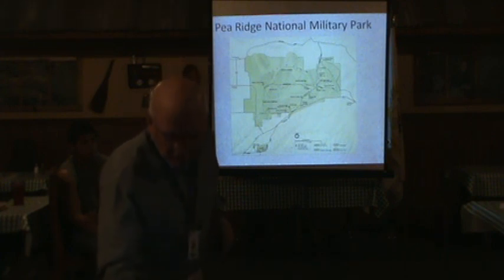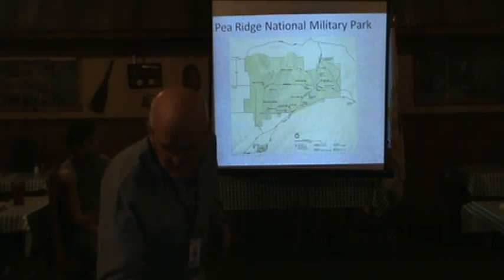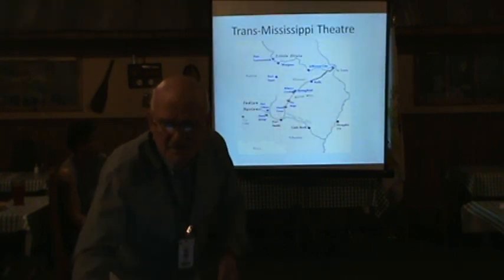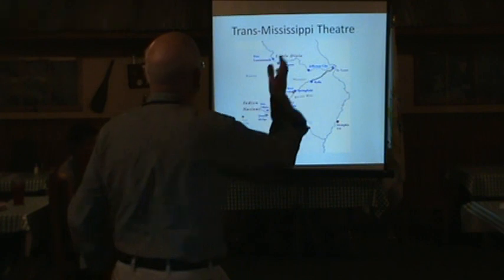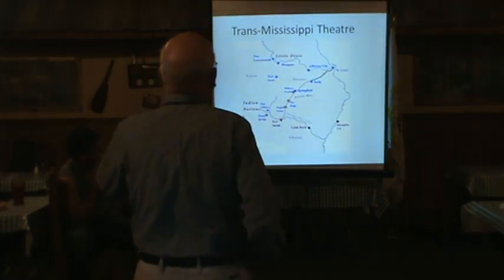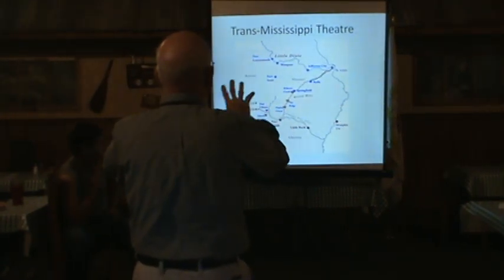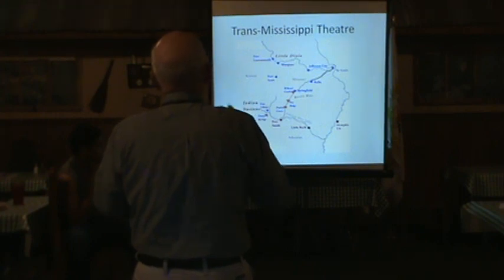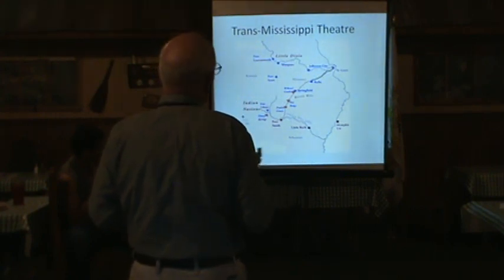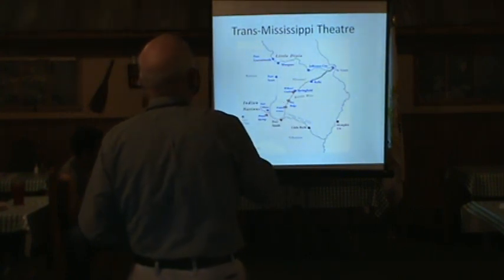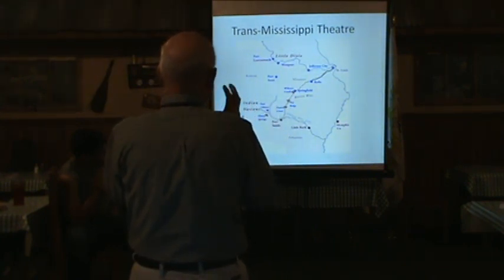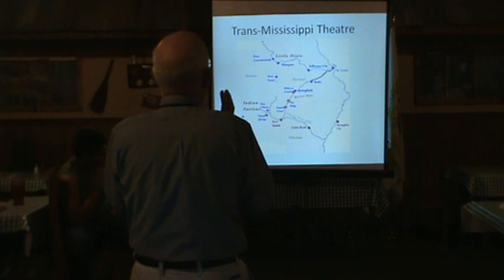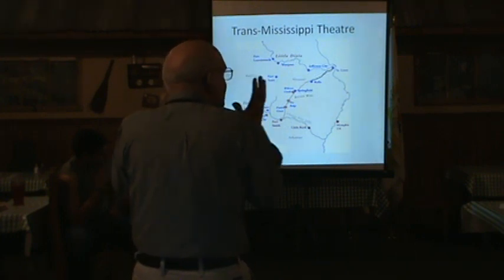I want to give a little bit of background on the whole campaign and everything that led up to this battle. This is the Trans-Mississippi Theater. See St. Louis up in the upper right. The gray area in the middle is what was considered the Trans-Mississippi region — meaning across the Mississippi — and the reason why this was such an important area of activity.